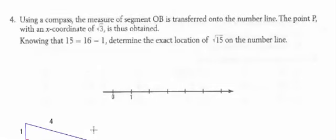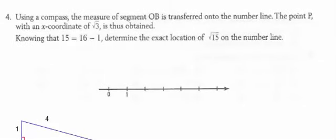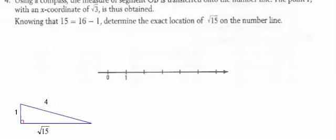Alright, so that's interesting. Like this, right? So the hypotenuse is 4, the square root of 15 is one side and 1 is the other side.